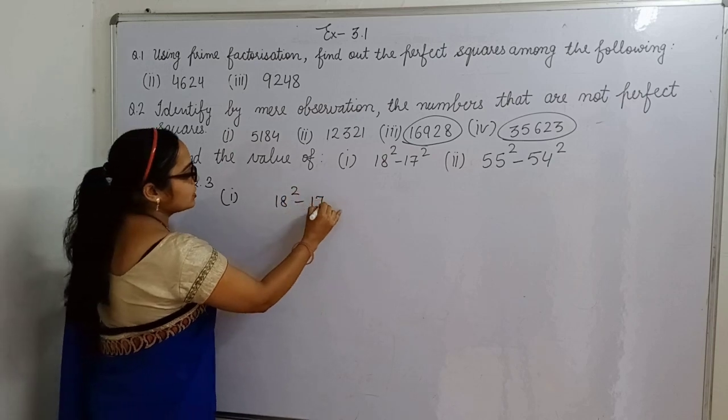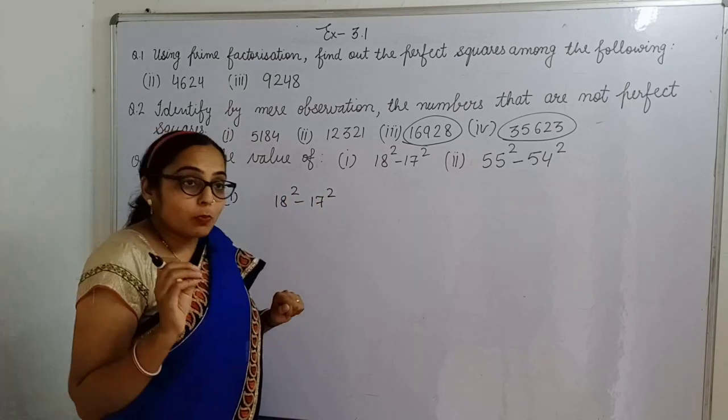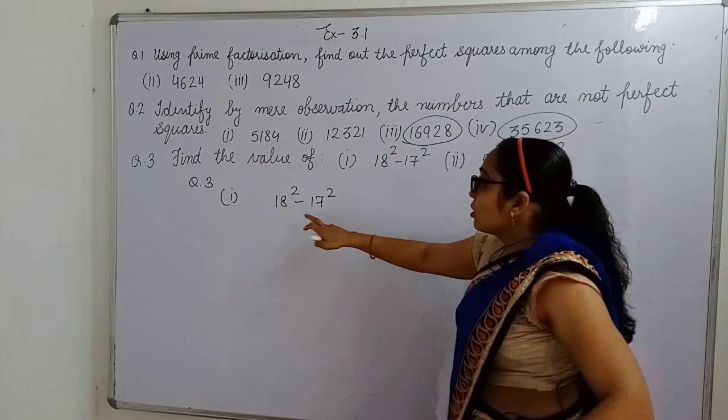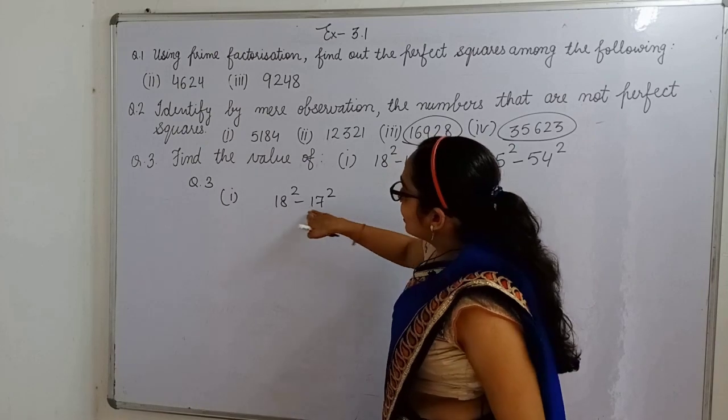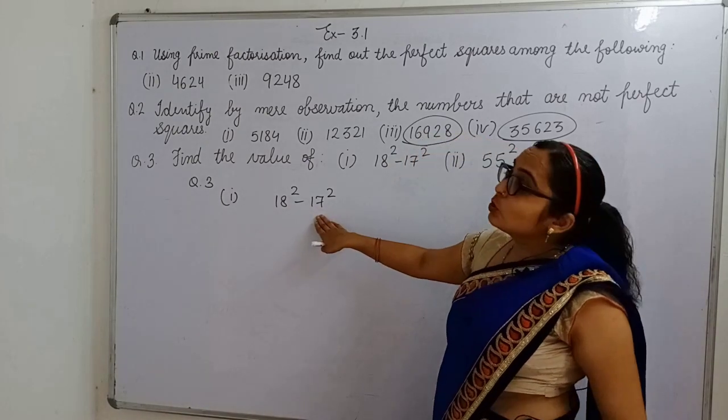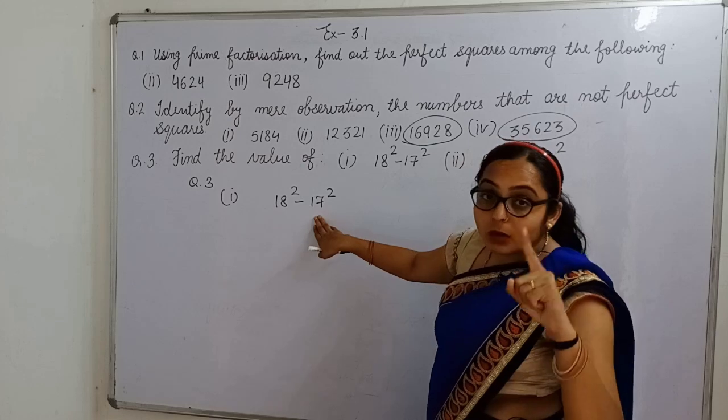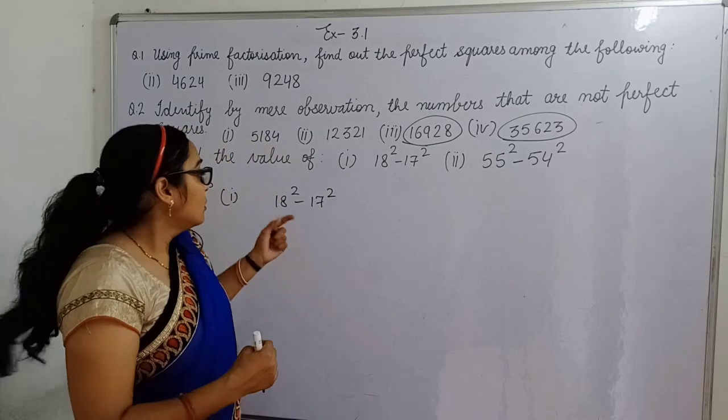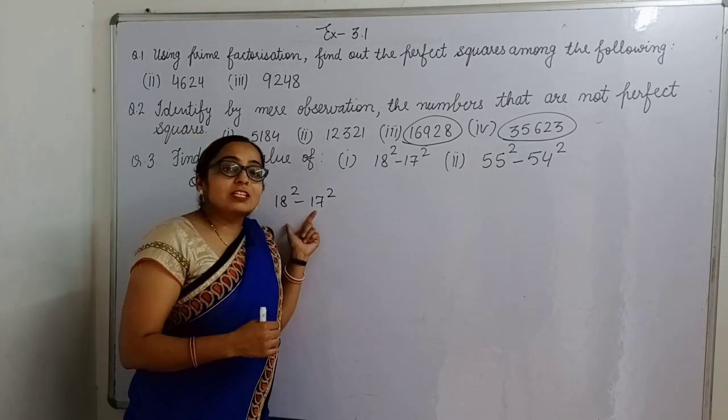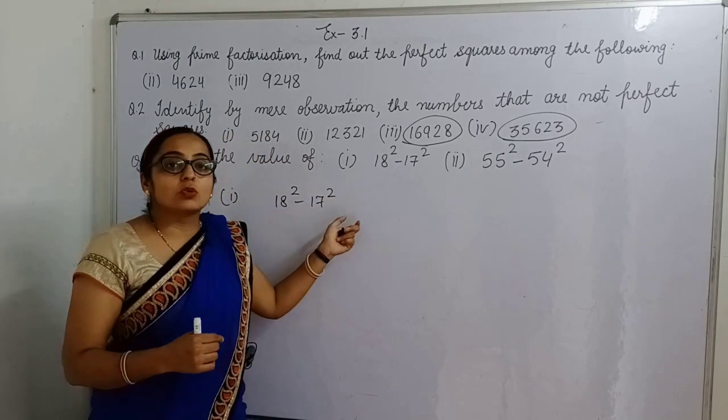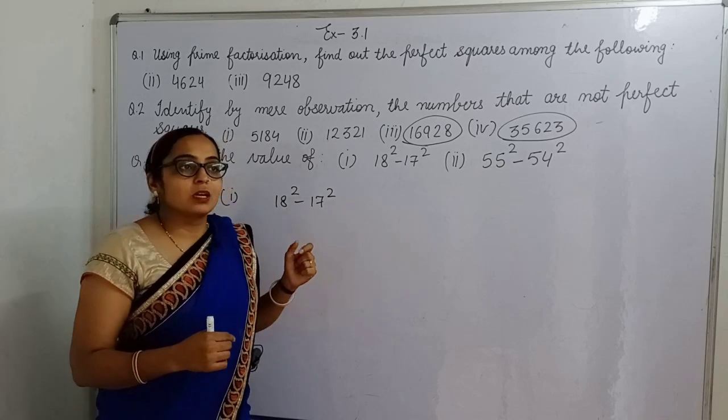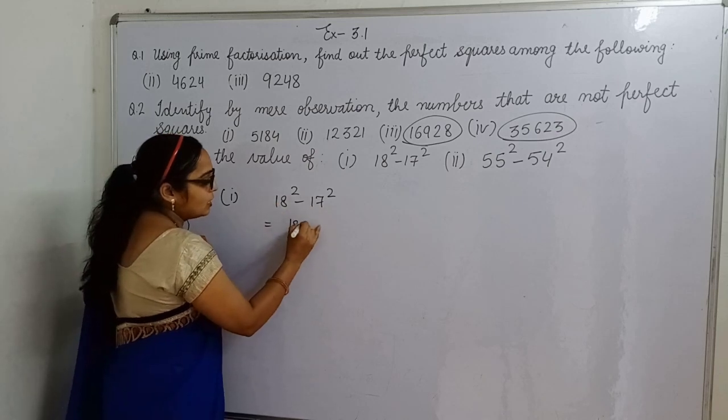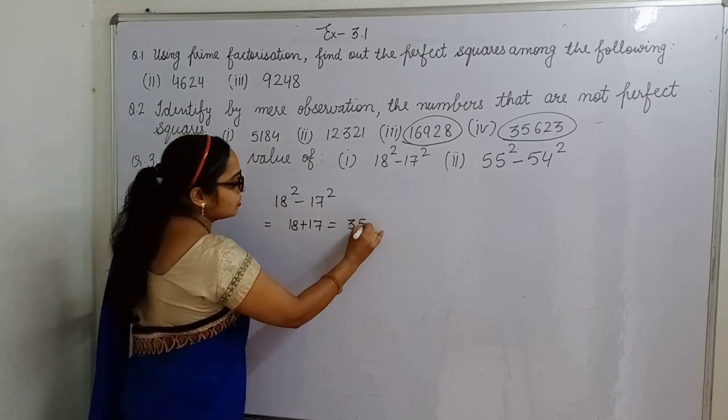This property also I have told you that, what is in this property? That, pehle aapko dekhna hai - consecutive numbers are this. To yahaan square ka difference. This is our property that difference of the square of two consecutive numbers is equal to the sum of those numbers. Just we have to do only this. To yahaan kya jayega - 18 + 17, that is 35.